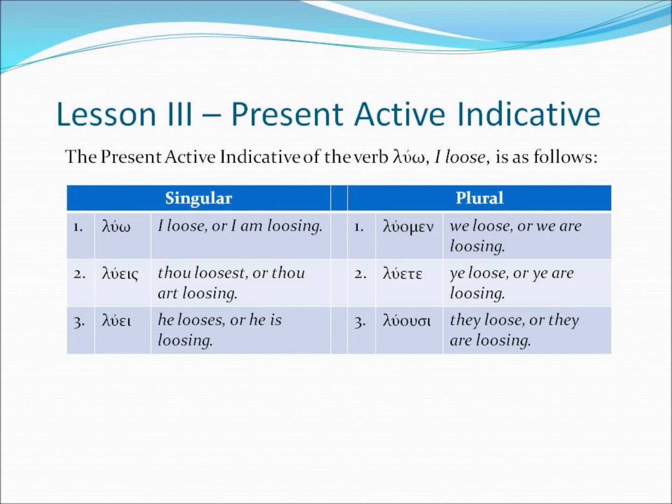If we wanted to convert luo to a third person singular, we would say luay. This would be translated he looses, or she looses, or he or she is loosing. So we see the present active indicative singulars go: luo — I loose; luase — thou loosest; and luay — he or she looses. Now for the plurals: first person plural, we loose, would be luamen; second person plural, ye loose or ye are loosing, would be luete; and the third person plural, they loose or they are loosing, would be luusi.